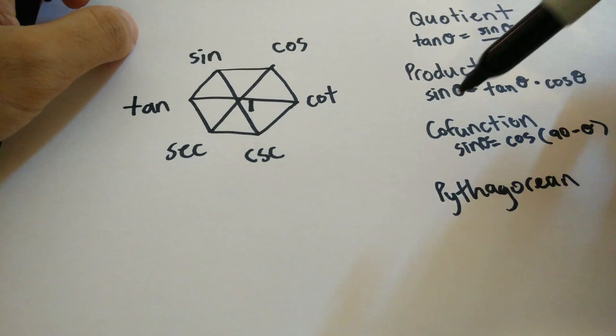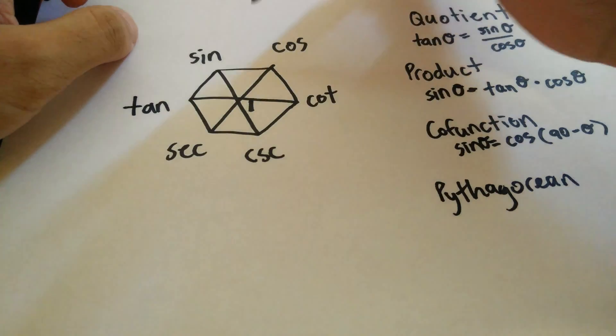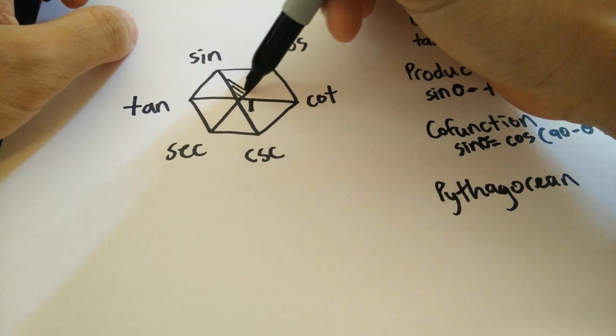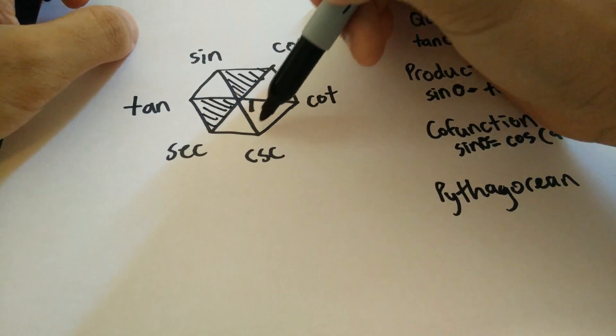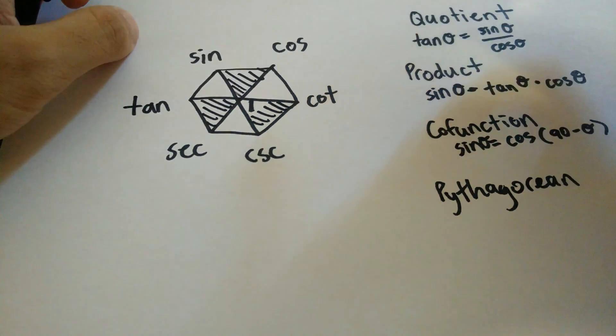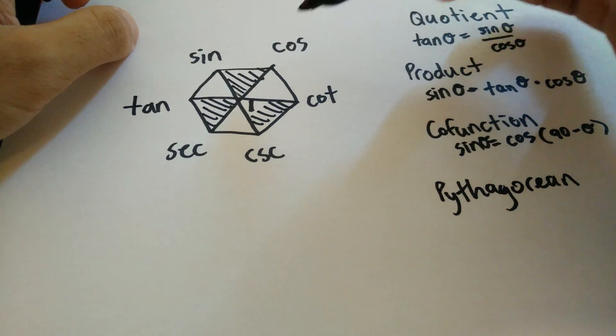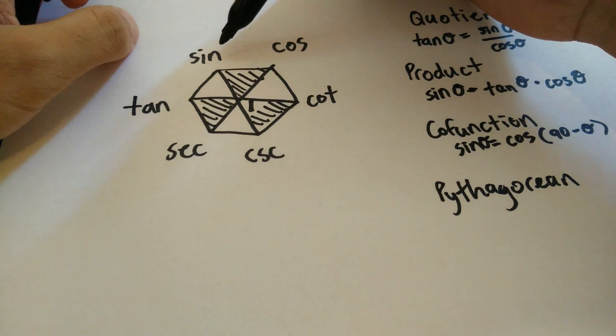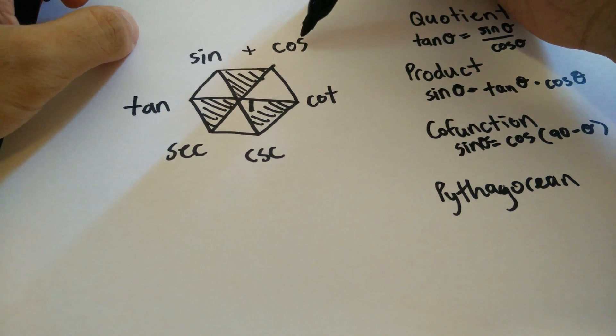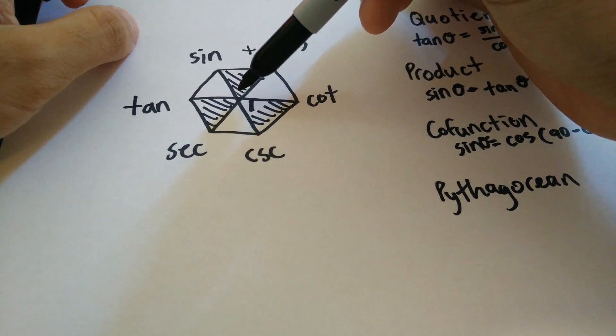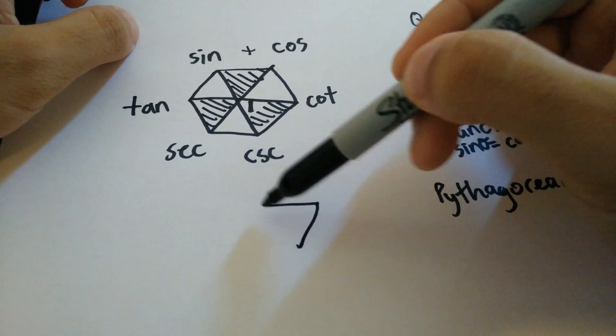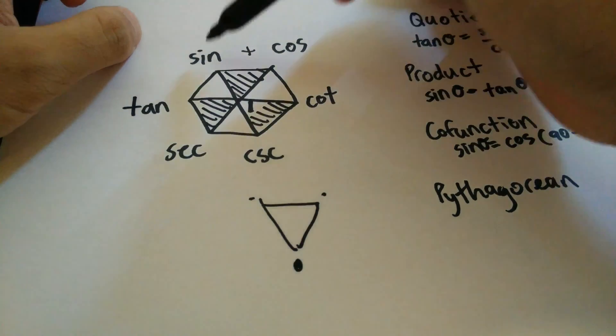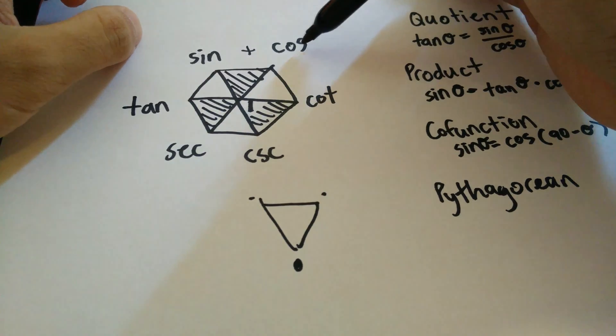And to use the Pythagorean identities, you take each little triangle, this triangle right here, this triangle right here, and this triangle right here. You can use this triangle to find the Pythagorean identities. Sine squared theta plus cosine squared theta is equal to 1. It's like a funnel. The two at the top add up to the one at the bottom. So sine squared theta plus cosine squared theta equals to 1.